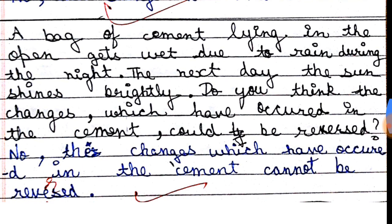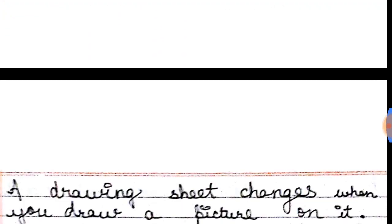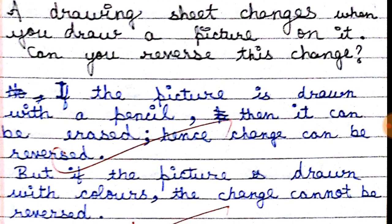Next question: a bag of cement lying in the open gets wet due to rain during the night. The next day the sun shines brightly. Do you think the changes which have occurred in the cement could be reversed? No, the changes in the cement cannot be reversed. When water gets into the cement, it sets hard, and the powder form of cement cannot be restored again. So the answer is no.